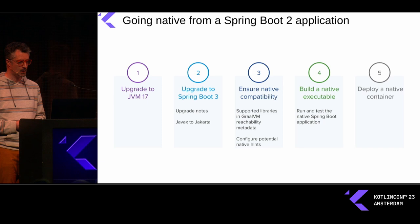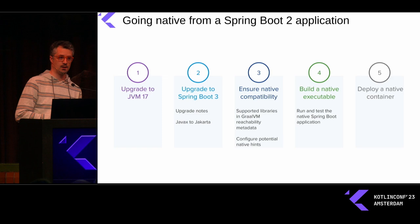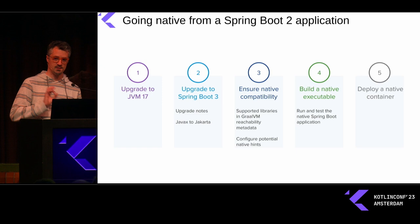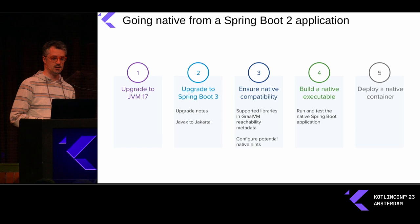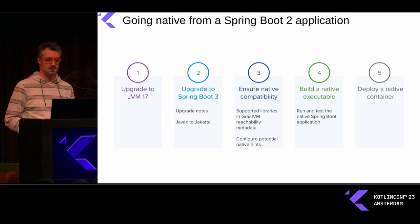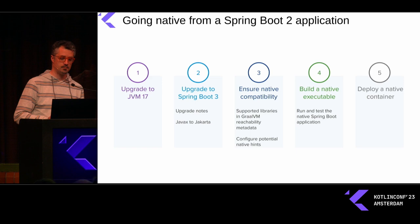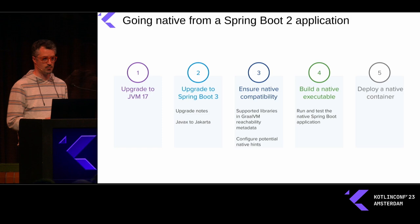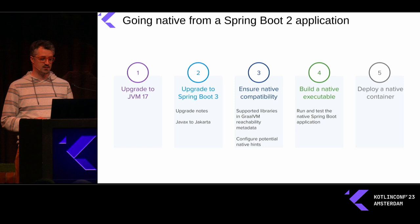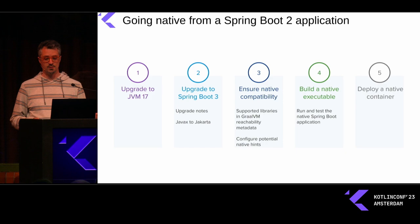One of the most interesting points about native support in Spring Boot is that we don't only target new applications — you can migrate your existing application to native. There are five steps: first, configure your build to use JVM 17 bytecode (the baseline for Spring Boot 3 and Spring Framework 6). Second, migrate from Java EE to Jakarta — mostly searching and replacing Java EE packages with Jakarta. Third, check your libraries for native support and configure native hints. Fourth, build the native executable. Fifth, deploy it as a native container.